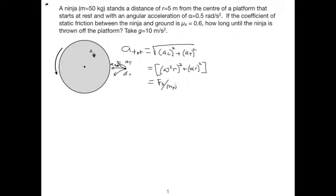If I know the mass of the ninja, I can figure out how fast this ninja can be spun without being thrown off. We know that the static friction force at maximum is mu_s times the mass of the ninja times g, divided by the mass of the ninja. So we know that this acceleration has to be less than mu_s times g, and the condition when the ninja is thrown off is just when it equals mu_s times g.